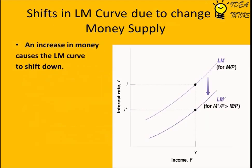Regarding shifts in the LM curve due to changes in money supply: the figure shows that an increase in money causes the LM curve to shift down.